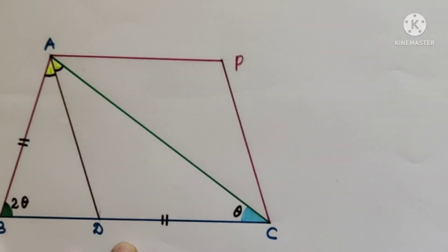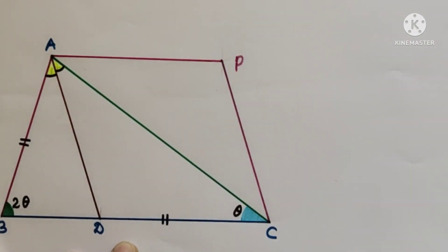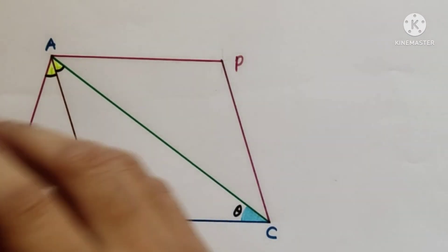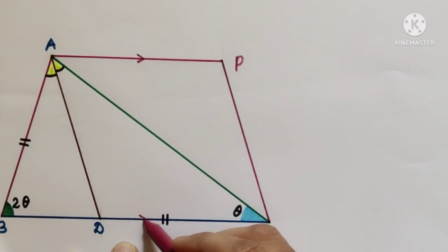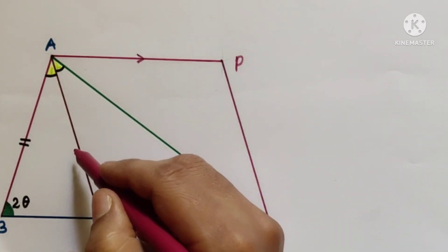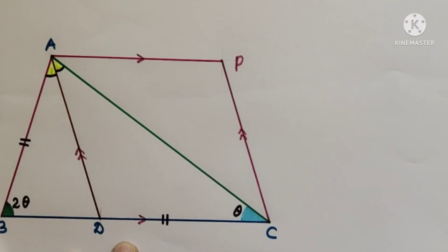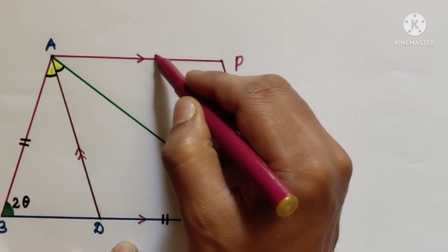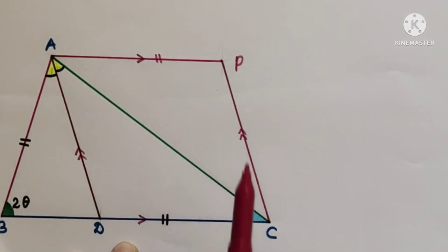Now we will solve this question with another method. Draw AP parallel to DC and CP parallel to AD. Since this side is parallel to this side and this side is parallel to this side, APCD is a parallelogram. Therefore opposite sides are equal, and we join BP.